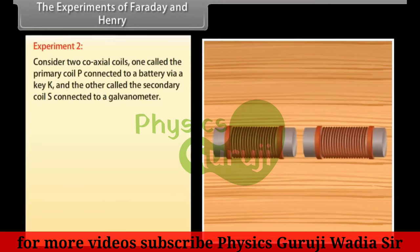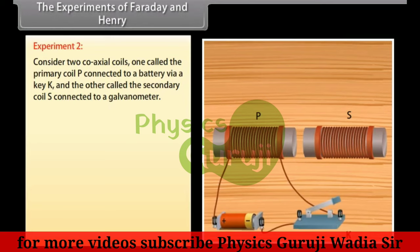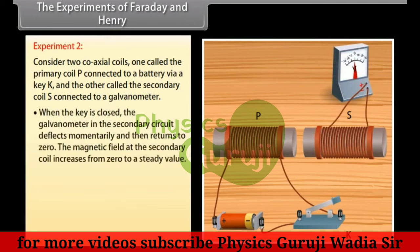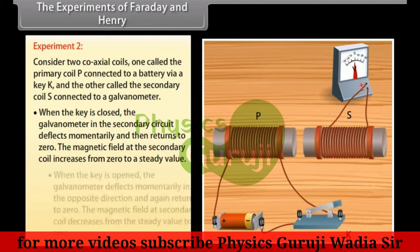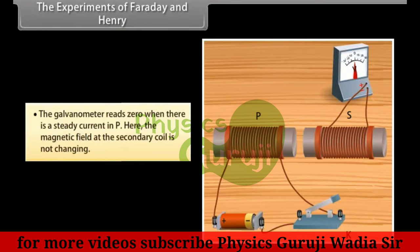Experiment 2: Two coils are used — the primary coil P connected to a battery via a key K, and the secondary coil S connected to a galvanometer. When the key is closed, the galvanometer in the secondary circuit deflects momentarily and then returns to zero, as the magnetic field at the secondary coil increases to a steady value. When the key is opened, the galvanometer deflects momentarily in the opposite direction and again returns to zero, as the magnetic field decreases to zero. The galvanometer reads zero when there is a steady current in P, as the magnetic field is not changing.